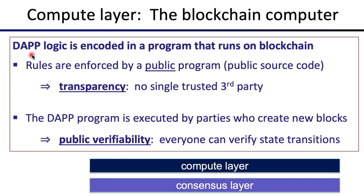Programs are basically manipulating states, and all those state manipulations are written to the blockchain so everyone can verify they're valid. The dApp logic — the program logic — is encoded in a program that runs on the blockchain. This means the rules are enforced by the public program: anyone can inspect the program that's running on the chain. All the code running on the blockchain is completely public for the whole world to see — no proprietary code, no secret code.